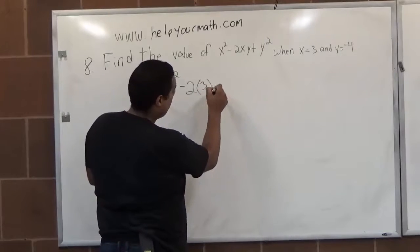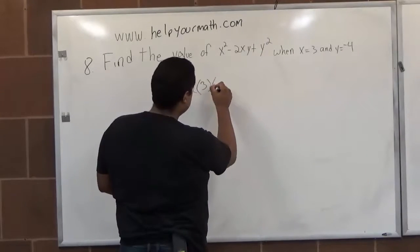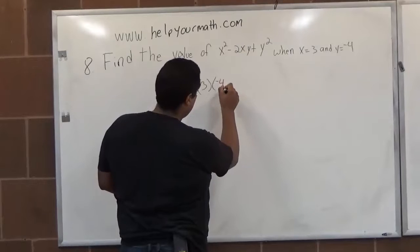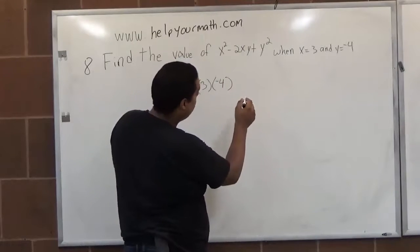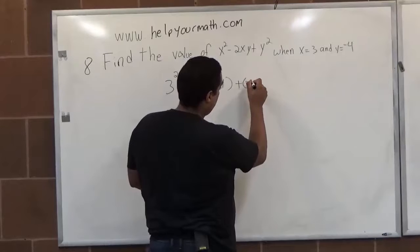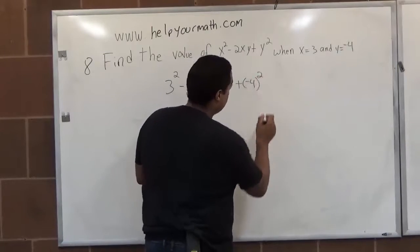times y, which is negative 4, plus y squared, which is negative 4 squared.